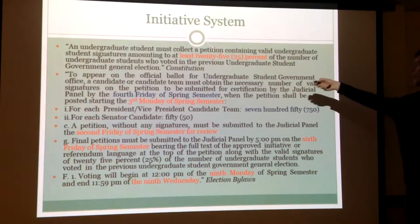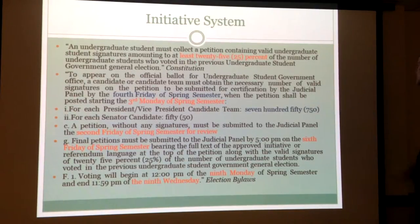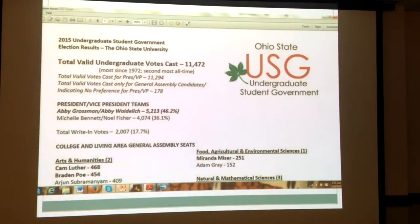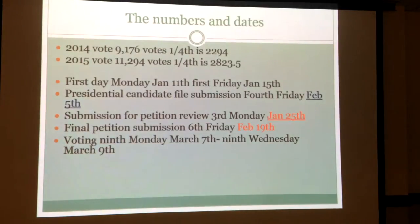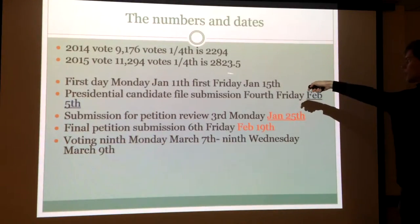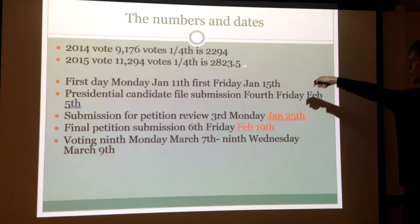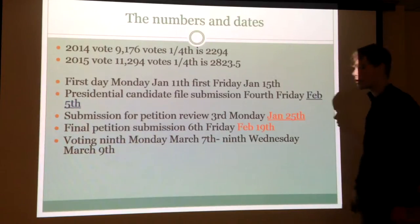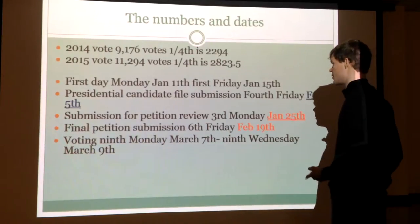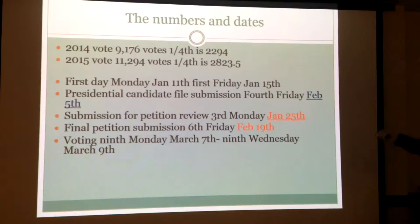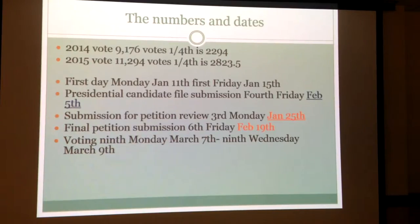Right now we have 25%. What that functionally means is that if you compare that to the 11,472 voters of the previous election, someone would need to get 2,823 signatures to have their initiative go through.